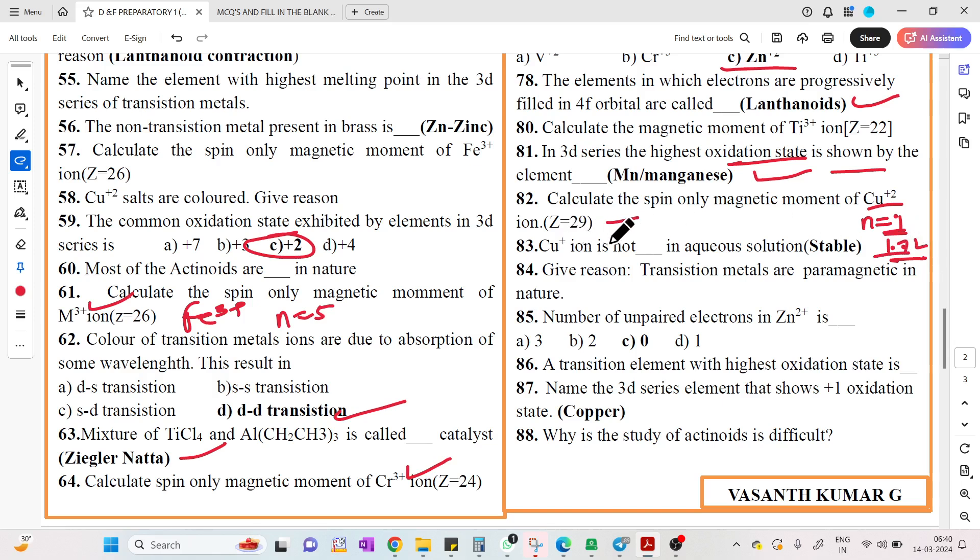The element in which electrons are progressively filled in 4F is called lanthanides. In 3D series, highest oxidation state. Spin only magnetic moment of Cu2+: N equals 1, so 1.72 Bohr magneton. Number of unpaired electrons in copper is 1.